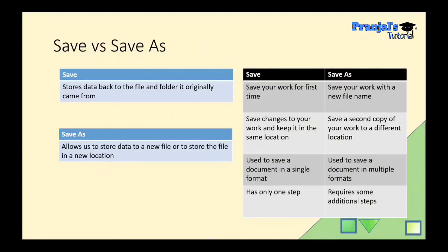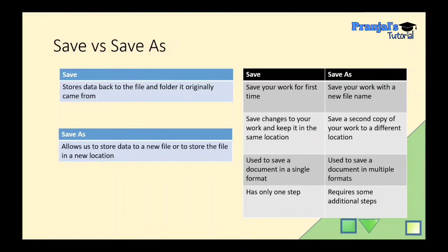Next is Save versus Save As. MS Word has two save options: Save and Save As. Save is used to save changes to the original file — it updates the existing file with your modifications. Save As is used to save the document as a new file, preserving the original. This is an important exam question: what is the difference between Save and Save As?